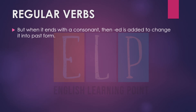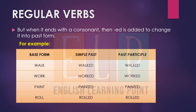But when the verb ends with a consonant, then ED is added to change it into past form. For example: walk, work, paint, roll — these end with consonant letters like K. They don't end with vowels, so we put ED for the second and third form. Walk → walked, walked; work → worked, worked; paint → painted, painted; roll → rolled, rolled. We put ED in the second and third form.